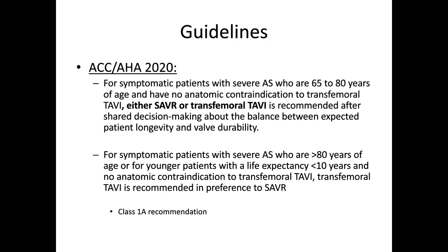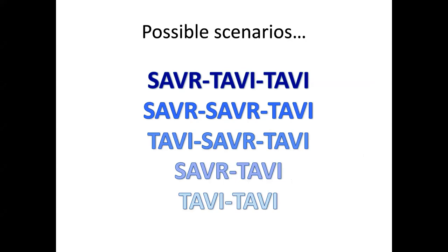For symptomatic patients more than 80 years old, or for younger patients with a life expectancy less than 10 years and no anatomic contraindication to transfemoral TAVI, transfemoral TAVI is recommended in preference to SAVR. For younger patients, there are many possible scenarios — SAVR then TAVI, TAVI then SAVR, and so on. The question is what is reasonable: one procedure over a lifetime, two procedures? Three starts to be too many.